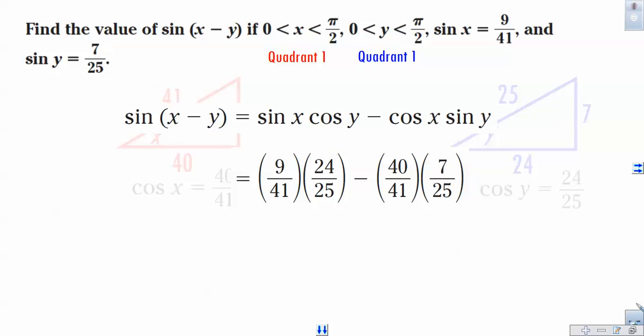Okay, now focusing on this exclusively here, let's just do top times top, bottom times bottom, and then let's subtract the two numbers. After we multiply 9 times 24 and 40 times 7, eventually we end up here: negative 64 over 1025. There is our answer.